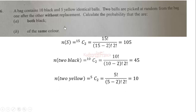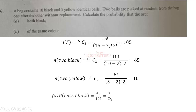Now we want to calculate the probability that both balls are black. That will be the number of ways of choosing two black balls — the first is black and the second is black — which is 45, over the sample space 105. So that gives us 45 over 105, which is 3 over 7.